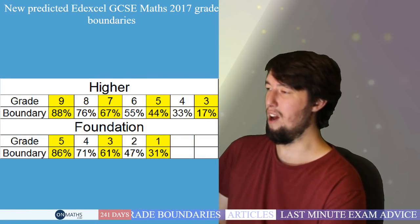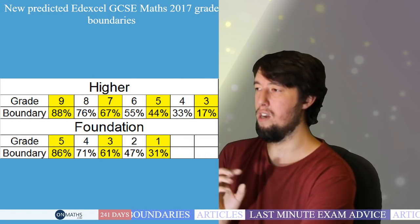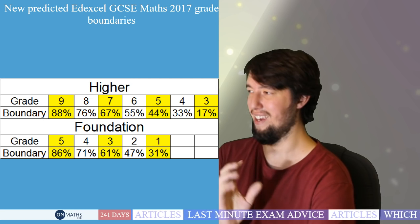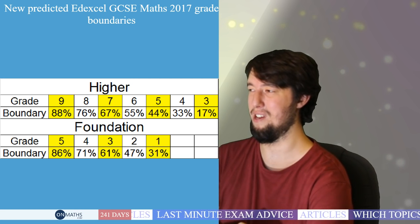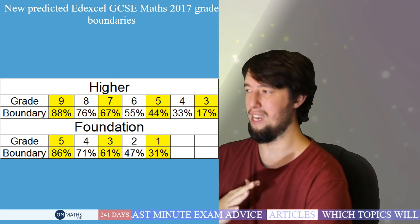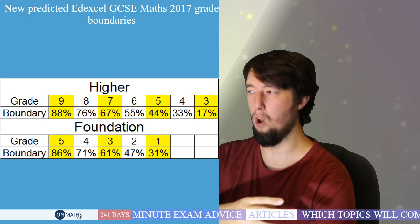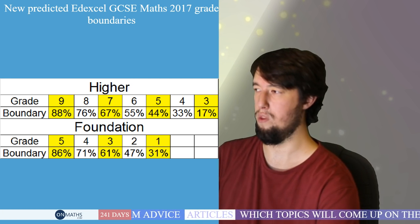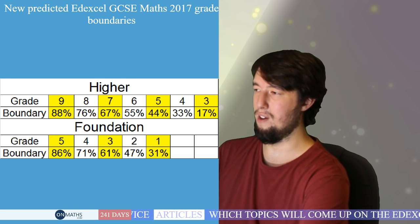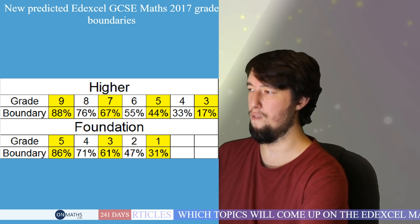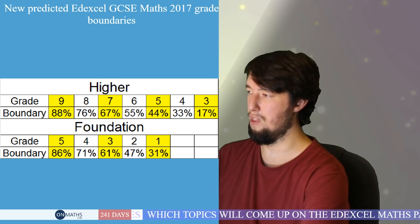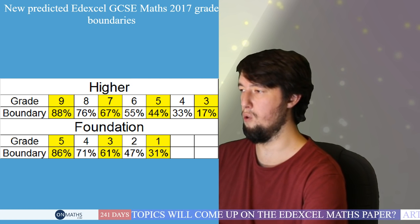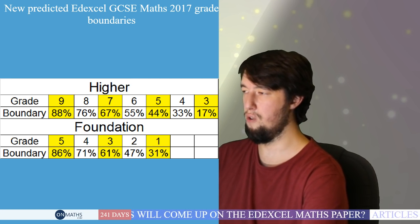So here we go. For higher, I'm predicting: grade 9 is 88%, grade 8 is 76%, grade 7 is 67%, grade 6 is 55%, grade 5 is 44%, grade 4 is 33%, grade 3 is 17%. The exam is out of approximately 240 marks, so I've done these as percentages to make it easier — if you're sitting one of the papers for a mock or on OnMaths.com, you can see where you are. For foundation: grade 5 is 86%, grade 4 is 71%, grade 3 is 61%, grade 2 is 47%, grade 1 is 31%.